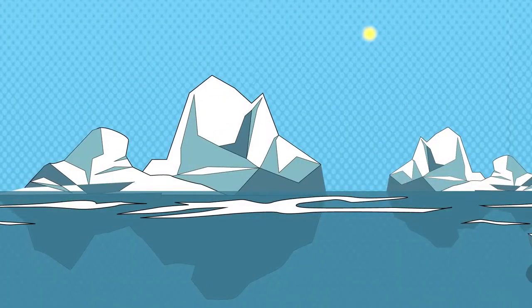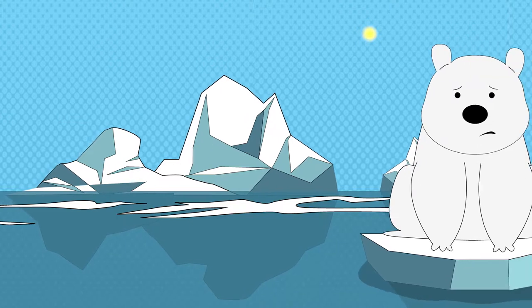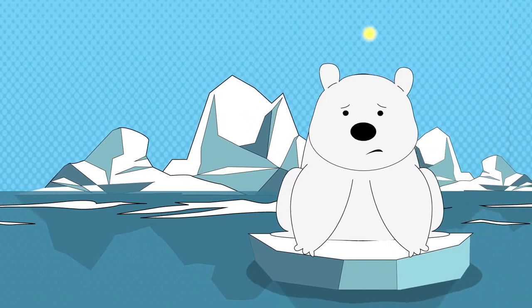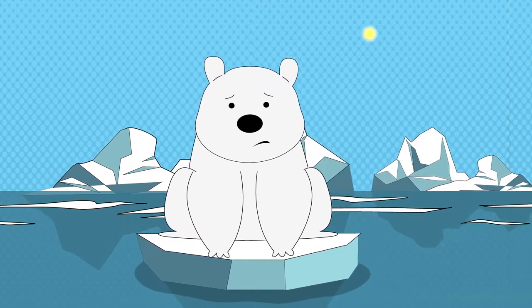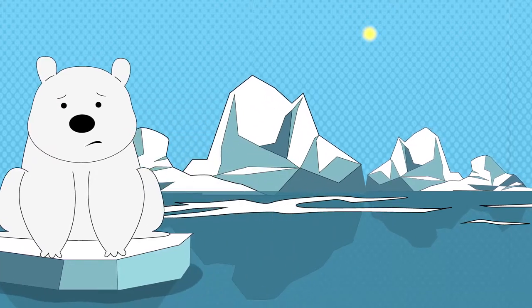For example, warmer weather in the Arctic and the subsequent melting of the sea ice has an effect on animals that are living there. The polar bear is no longer well adapted for living in its habitat, and is an endangered species.